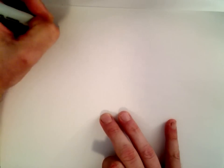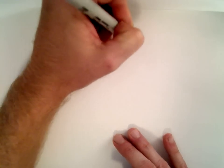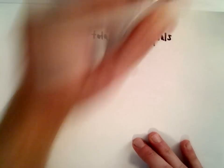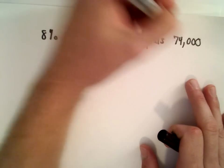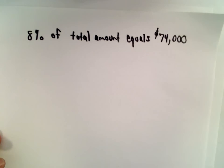So I'm going to write this out in words first. It says 8% of the total amount, that equals, we said $74,000. So 8% of the total amount equals $74,000.